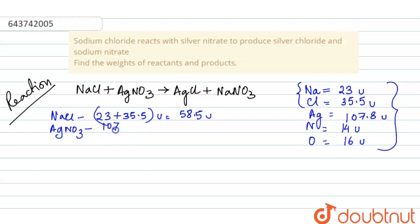And AgNO3 will be Ag, that is 107.8, plus N 14, and O3, that means 3 into 16, which is basically equal to 169.8 atomic mass unit. This was for the reactants.